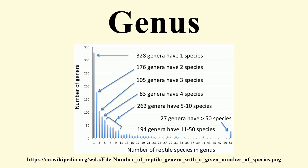Size. The number of species in genera varies considerably among taxonomic groups. For instance, among reptiles, which have about 1,180 genera, most have only one species, approximately 360 have between two and four species, 260 have five to ten species, approximately 200 have 11 to 50 species, and only 27 genera have more than 50 species. However, some insect genera such as the bee genera Lasioglossum and Andrena have over 1,000 species each.